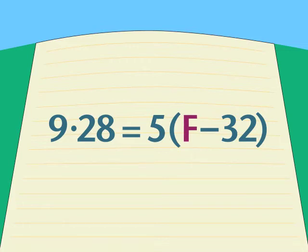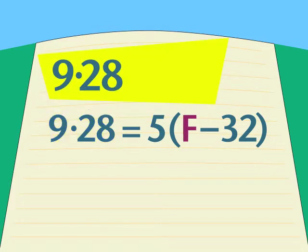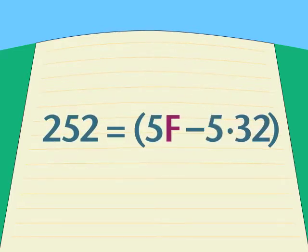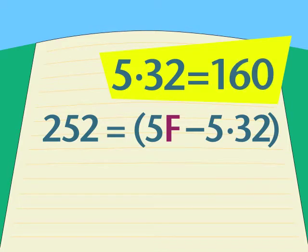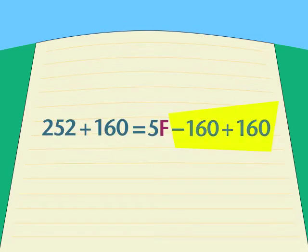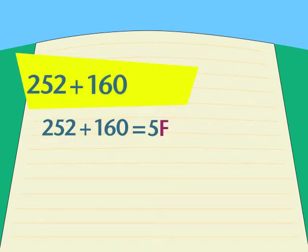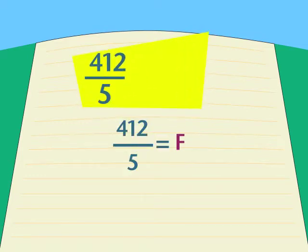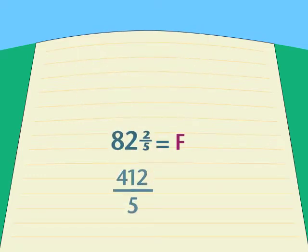With the fraction gone, the problem becomes very direct. We multiply it out, then add 160 to both sides in order to leave the 5F by itself. But we don't want 5F, we only want F, so we divide both sides by 5. Which gives us F equals 412 over 5, or 82 and two-fifths degrees.